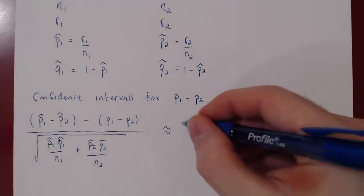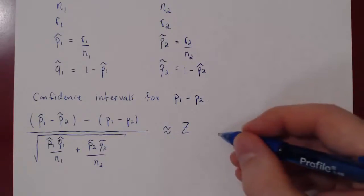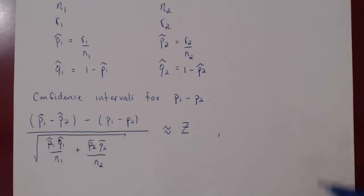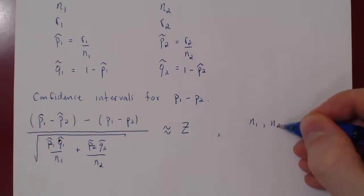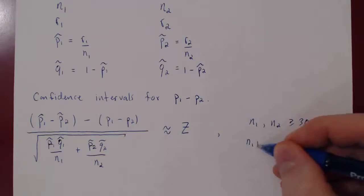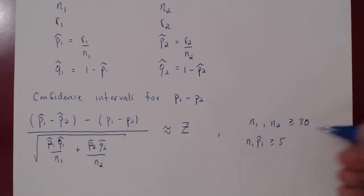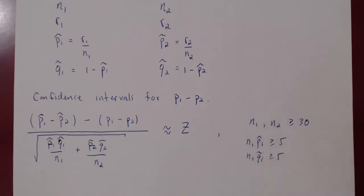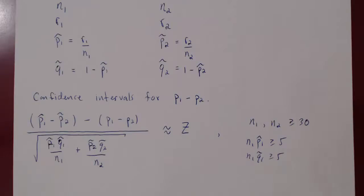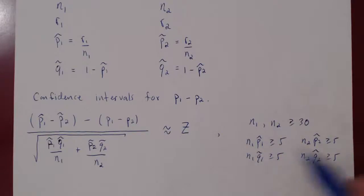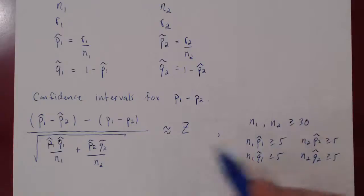This will follow approximately a z-distribution, as long as certain conditions hold. For this to be accurate enough we need the central limit theorem, so we could require n1 and n2 to both be above 30. There is a slightly stronger requirement: that n1 times p1-hat is at least 5, n1 times q1-hat is at least 5, and the same goes for n2 times p2-hat and n2 times q2-hat. For our purposes, as long as we have two samples of at least 30, we'll assume a good enough approximation.